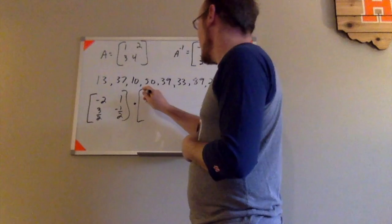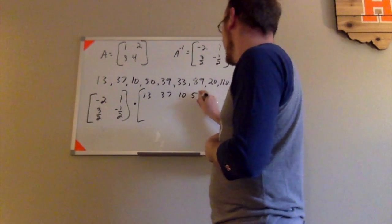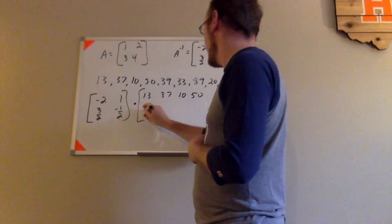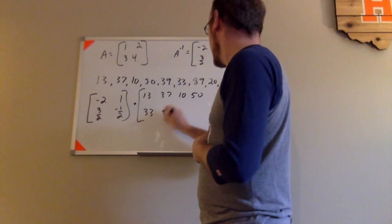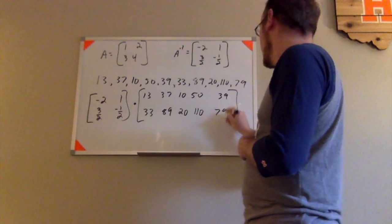if it was an odd number, then I would have had to maybe put a 0 or something at the end. So I have 13, 37, 10, 50, and 39. And then I have 33, 89, 20, 110, and 79.